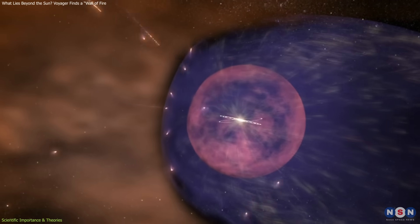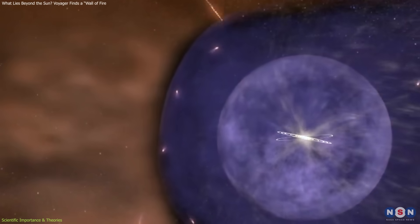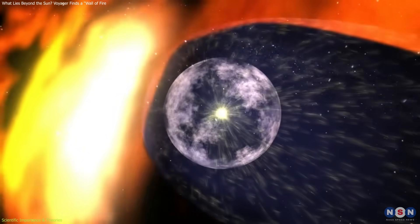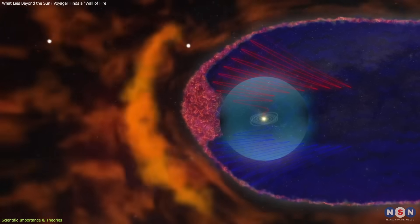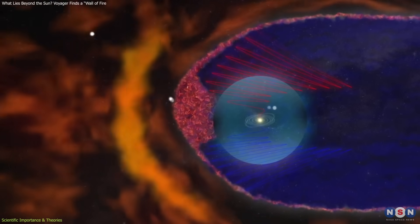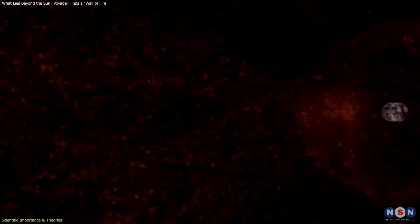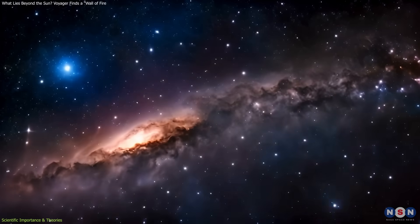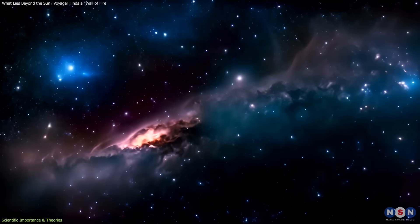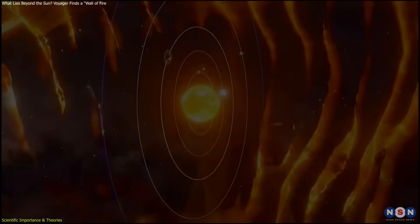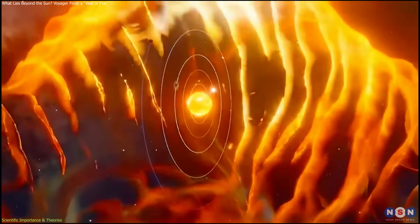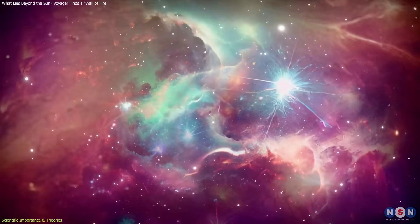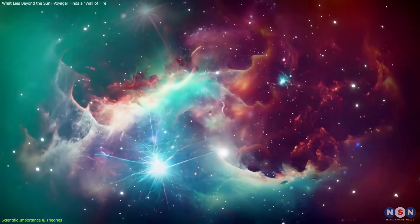The heliosphere serves as a shield against many of these particles. If the heliopause is more permeable or active than once believed, it could influence how much cosmic radiation reaches the inner solar system and, potentially, Earth. These insights also challenge older models of space weather on a galactic scale. Understanding how solar and interstellar forces interact at this boundary will help refine predictions of radiation levels in deep space, knowledge that's critical for planning future crewed missions beyond the heliosphere.